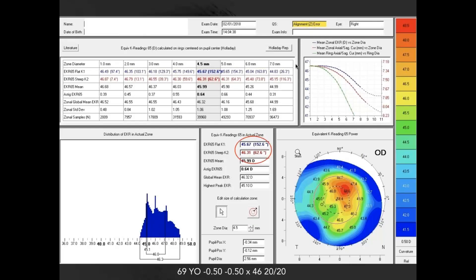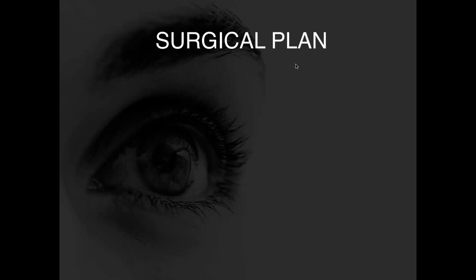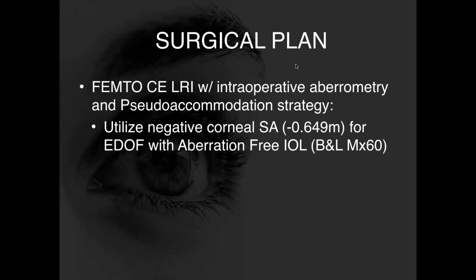Looking at the zonal analyses using the 4.5mm optical zone and smoothing for peaks and troughs, you can see what the mean keratometric value would be at essentially 46 diopters. You can customize this depending on pupil size, radial keratotomy incisions, and highly irregular corneas—allowing a lot of flexibility. Our surgical plan here: we don't want to compound the negative spherical aberration—we want to use it to our advantage. We've published in a number of abstracts utilizing negative spherical aberration in the cornea with an aberration-free IOL to extend depth of focus as a presbyopia-correcting strategy—essentially a pseudo-accommodative approach, as described by Caroline Rocha.